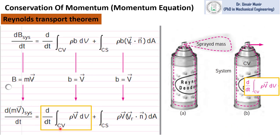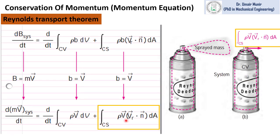The second term in the momentum equation represents the change in momentum inside the control volume. And the third term in this linear momentum equation is the rate of momentum flow through an outlet surface due to mass flow. CS stands for control surface, and this is an area integral which represents the momentum flux through a surface.